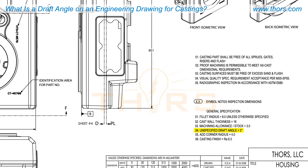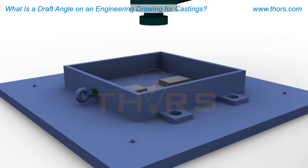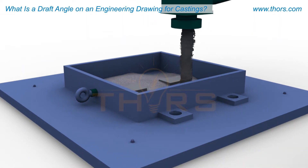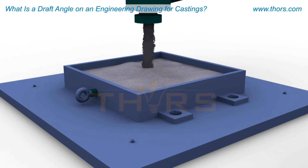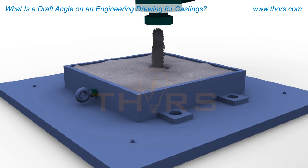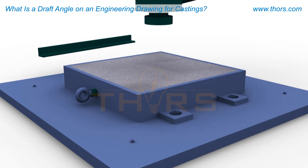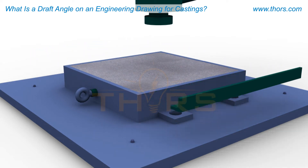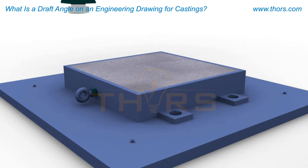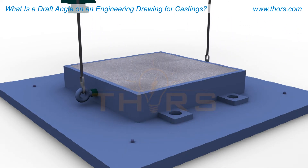Draft is necessary to allow for easy release of a mold or core from the tooling, or a casting from a die, without causing any damage. Depending on the form, fit, and function of the part, the design can include a specific draft angle. Knowing the correct draft angle ensures the part will be manufactured in the most efficient and economical manner.